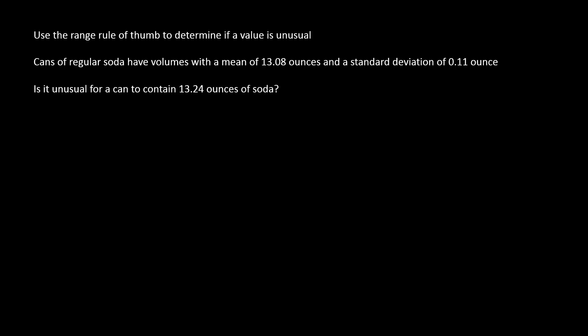Okay, let's use the range rule of thumb to determine if a value is unusual. Cans of regular soda have volumes with a mean of 13.08 ounces and a standard deviation of 0.11 ounces. Is it unusual for a can to contain 13.24 ounces?